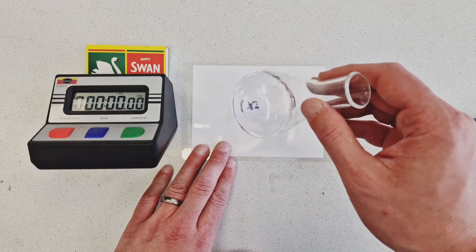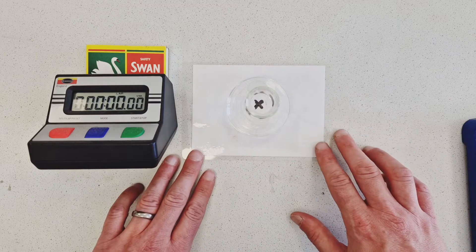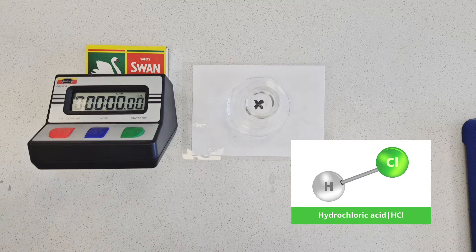This conical flask contains a colourless chemical known as sodium thiosulfate. Now, sodium thiosulfate is able to react with hydrochloric acid.